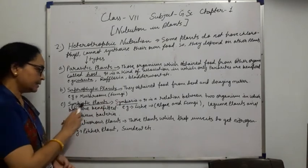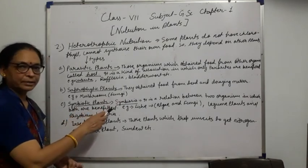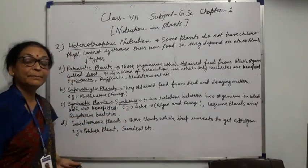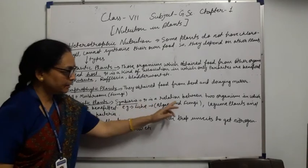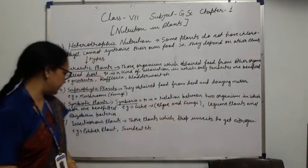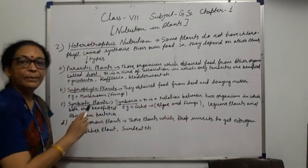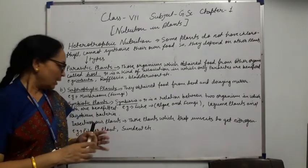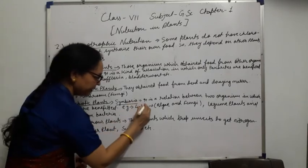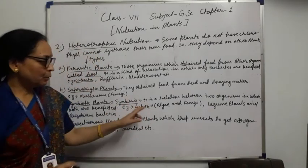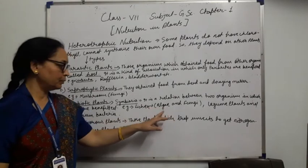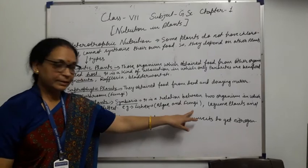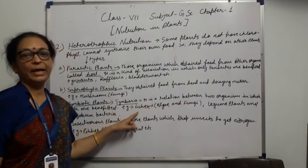The next type is symbiotic plants — a very important term. In symbiotic plants, an important term is symbiosis. Symbiosis is a relation between two organisms in which both are benefited — that is, both organisms benefit from each other. For example, lichen — in lichen, there is an association of two organisms. This process is called symbiosis. For example, algae and fungi — the relation between these two is called lichen.